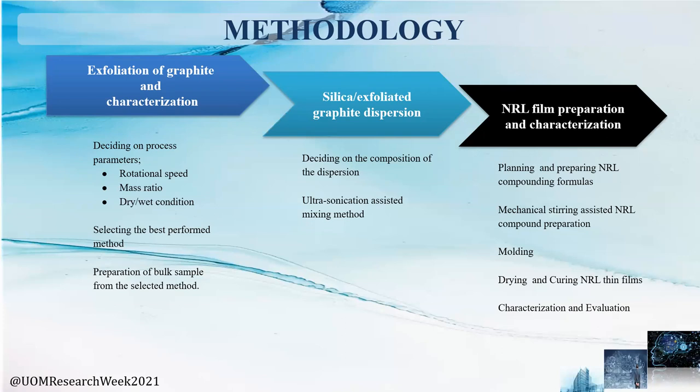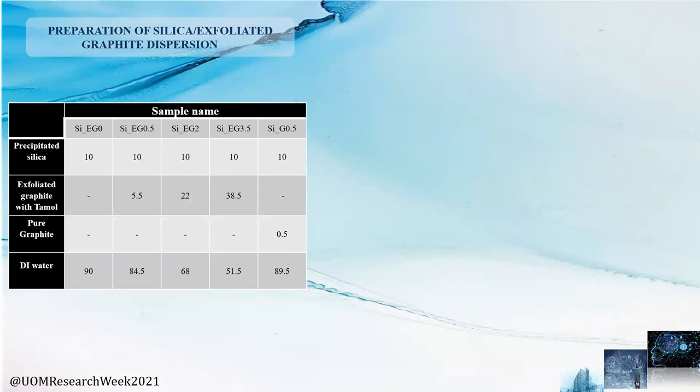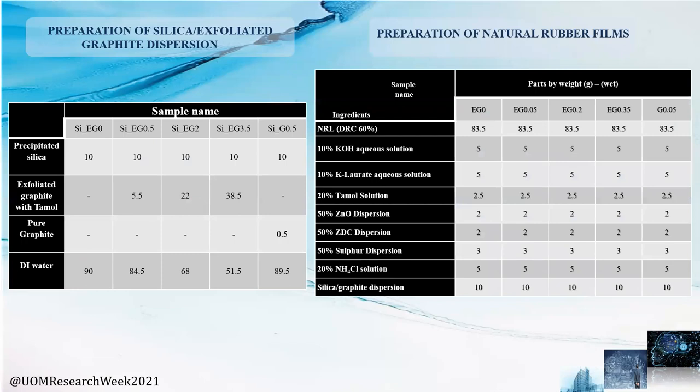The final step was to prepare natural rubber latex films and characterize them. First, we planned natural rubber latex compounding formulas, then prepared natural rubber latex dispersions with additives. The prepared dispersions were poured into molds, then dried and cured. In preparing aqueous dispersions of silica and exfoliated graphite, we tried three different mass ratios: 0.5%, 2%, and 3.5%. We also prepared a dispersion with just graphite and silica to understand whether the exfoliation of graphite had been effective, resulting in five different latex films for characterization.